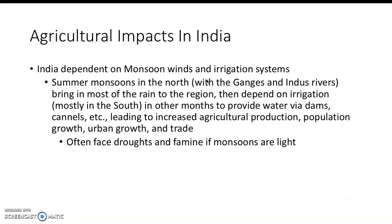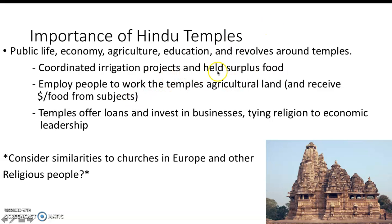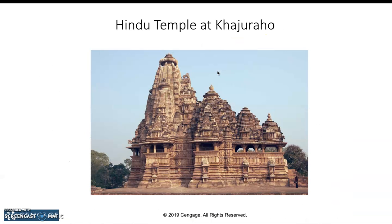Once they manage and expand those canals and waterways, it leads — as we've seen in China — to more agricultural production, which then leads to bigger population growth, urban growth, trade, and economic diversification. Unfortunately, in times when monsoons are not strong enough, insufficient rainfall can lead to droughts and famine. This comes back to the point about temples holding that extra surplus food to support the community in those difficult times.